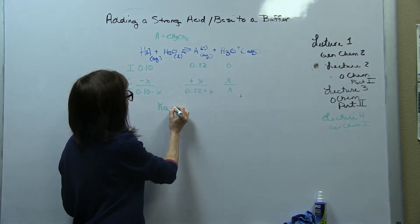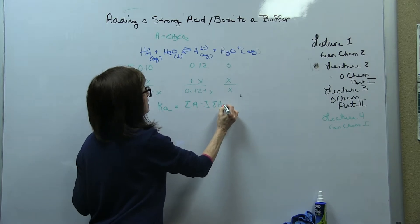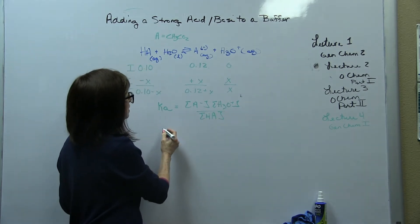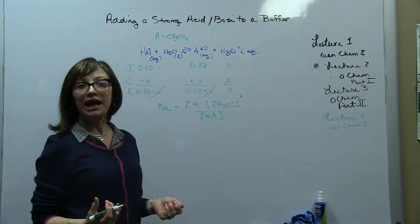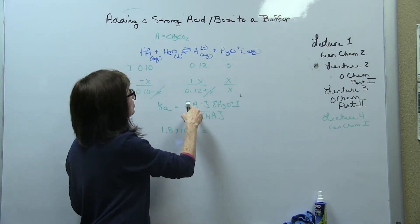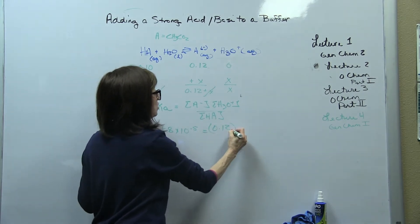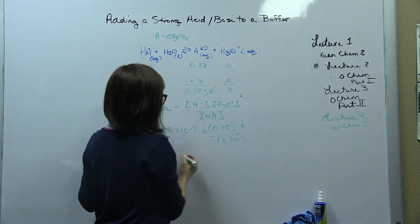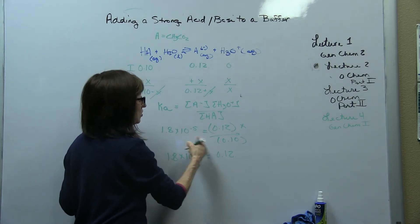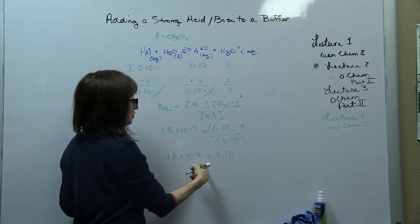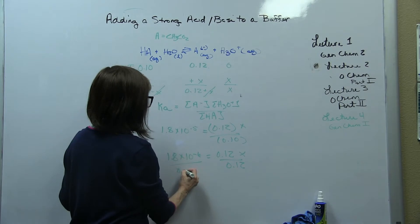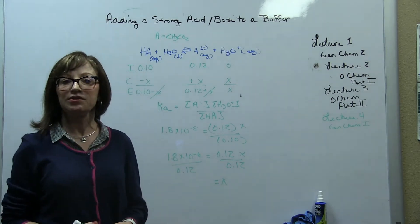So we have our expression. KA equals A minus H3O plus all over HA. And then we have, we're going to let this be negligible because we know the KA for acetic acid is 1.8 times 10 to the negative 5. Then we just put our values in. A minus is 0.12. We're solving for X. We're dividing by 0.10. So we have 1.8 times 10 to the negative 6 is equal to 0.12. When I cross this over, that's 1 times 10 to the negative 1, which gives me 1.8 times 10 to the negative 6. And then I have this X. I'm going to divide by 0.12, 0.12 to get X here. So let's see what X gives us.